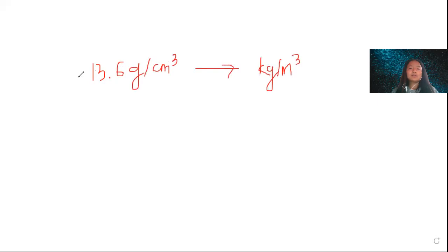Now, what does this mean, 13.6 gram per centimeter cube? It means that 13.6 gram of mercury is present in one centimeter cube of volume.